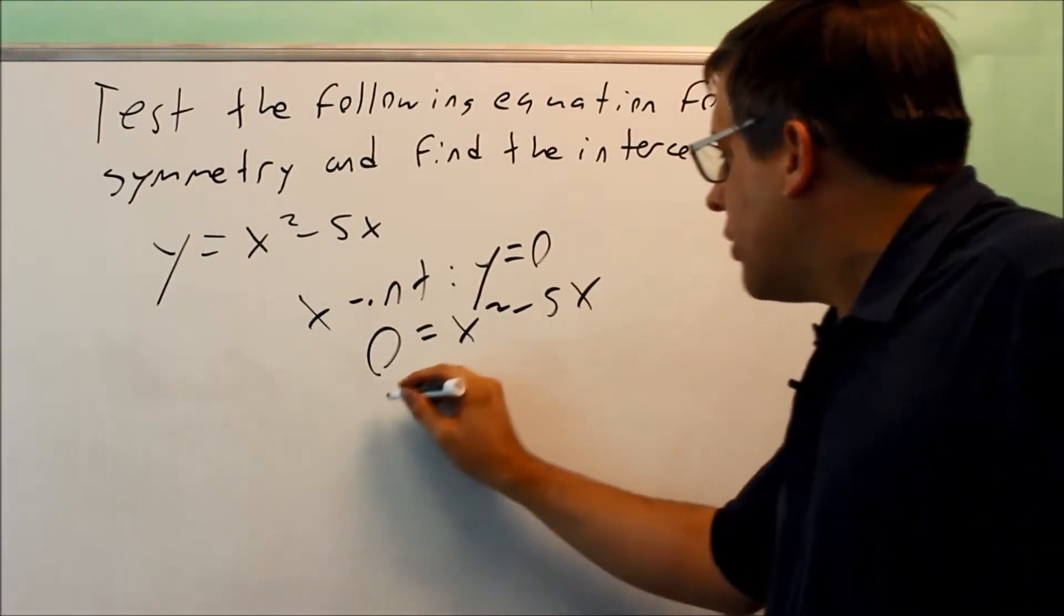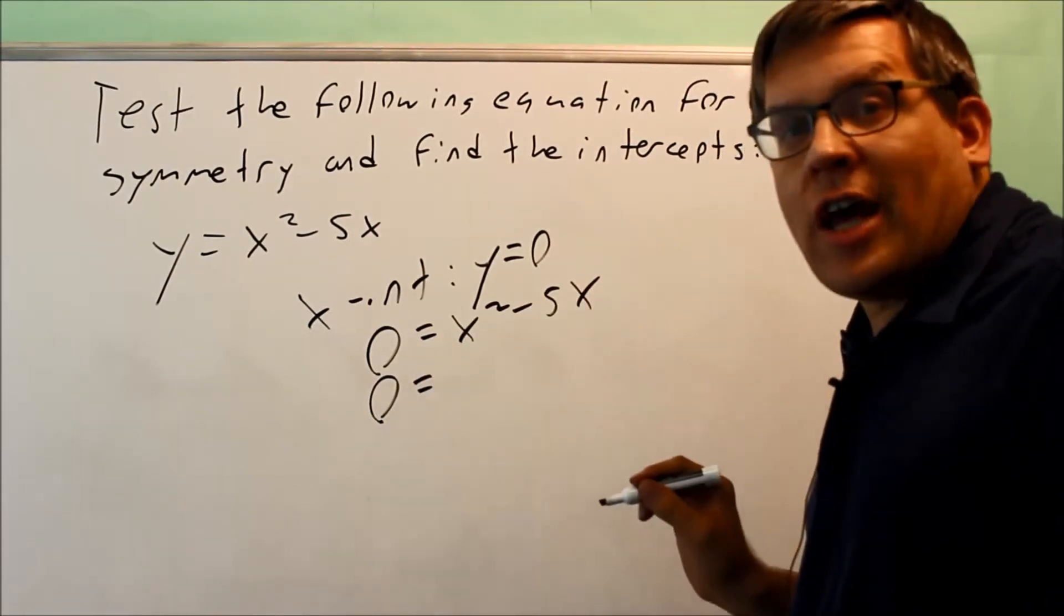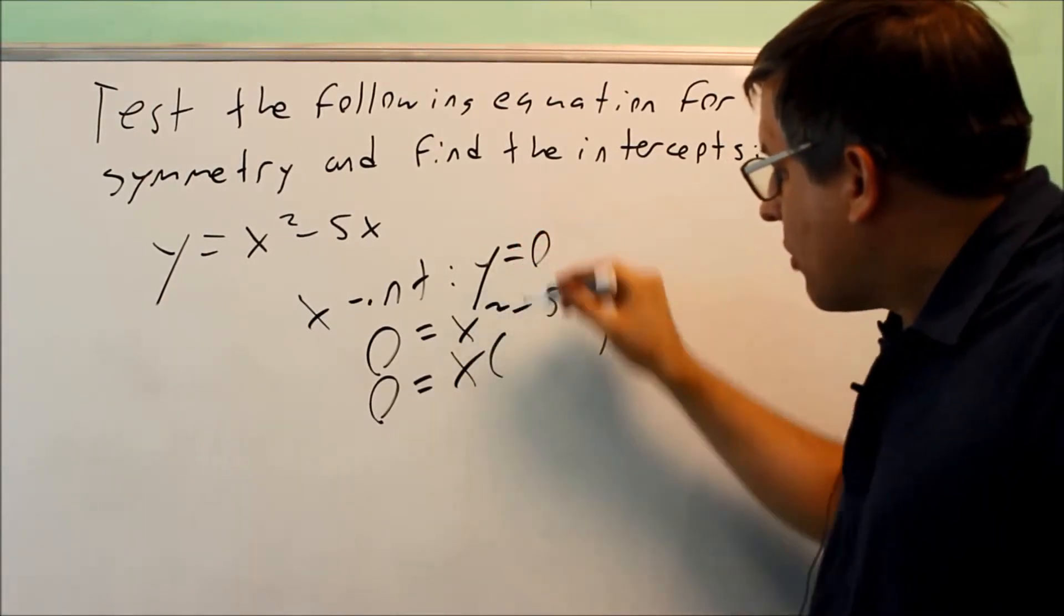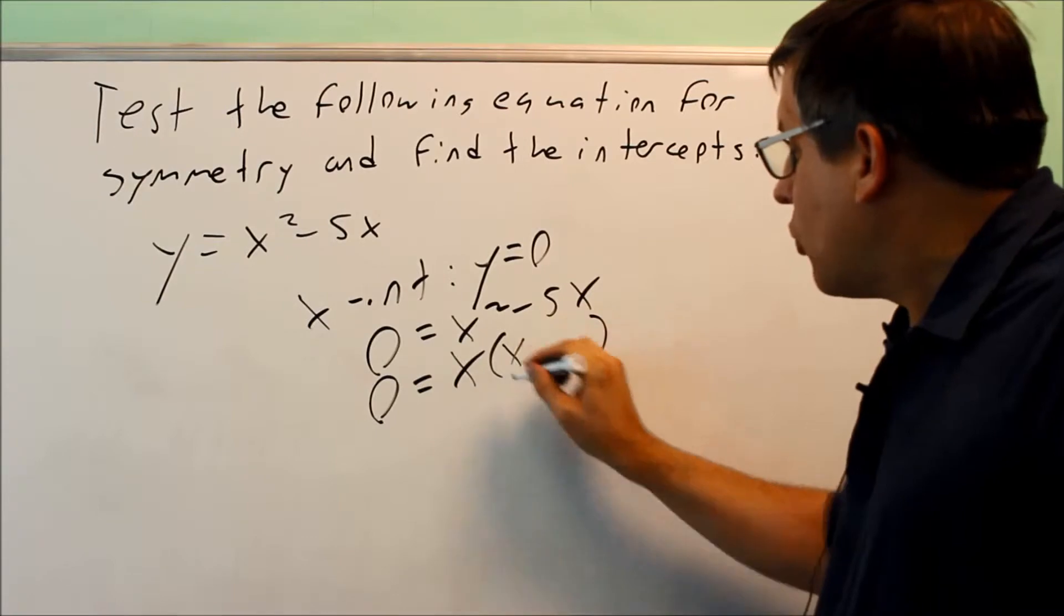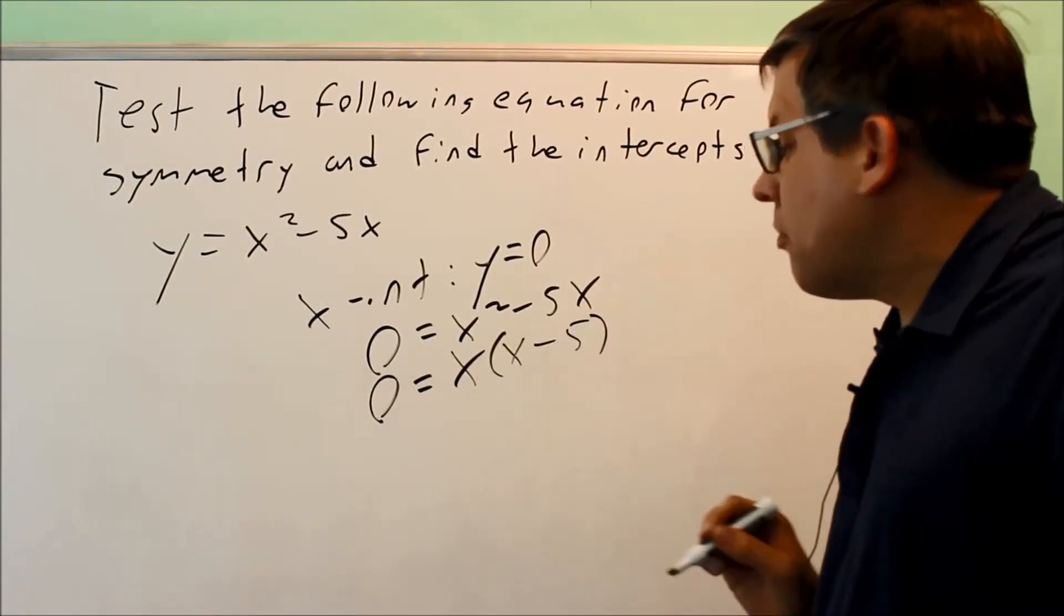We need to factor this equation to solve it. There's a common factor of x, so we pull out x from both terms. This gives us x(x - 5) = 0.